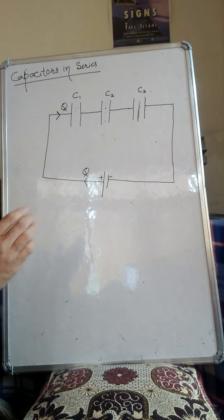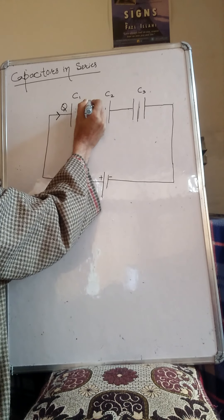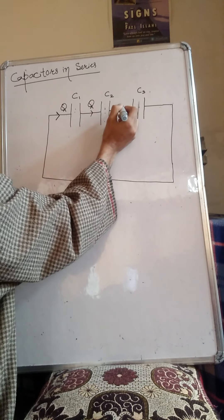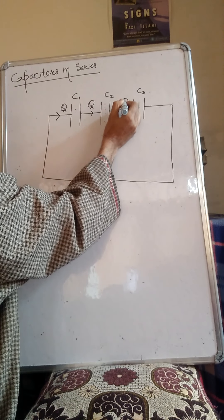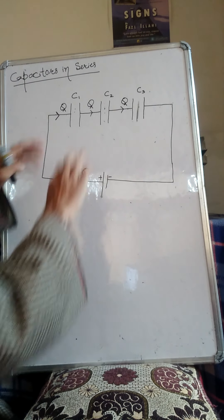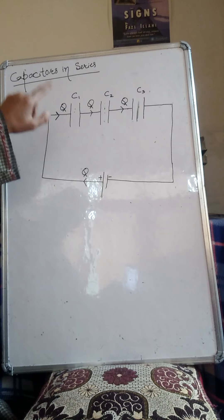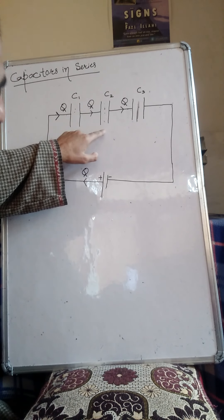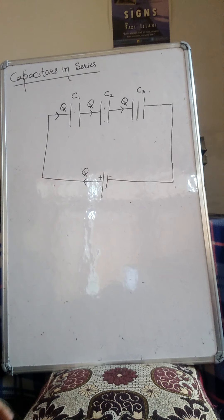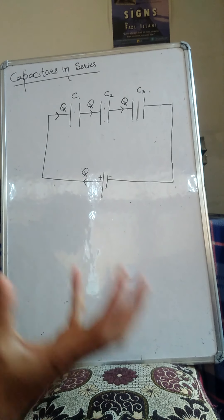But since C1, C2, and C3, they do lie on the same path, therefore there will be no division of the charge, there will be no distribution of the charge. That means whatever is the charge flowing through C1, same amount of charge will flow through C2 and same amount of charge will flow through C3. So this means that all these capacitors will receive the same amount of charge.